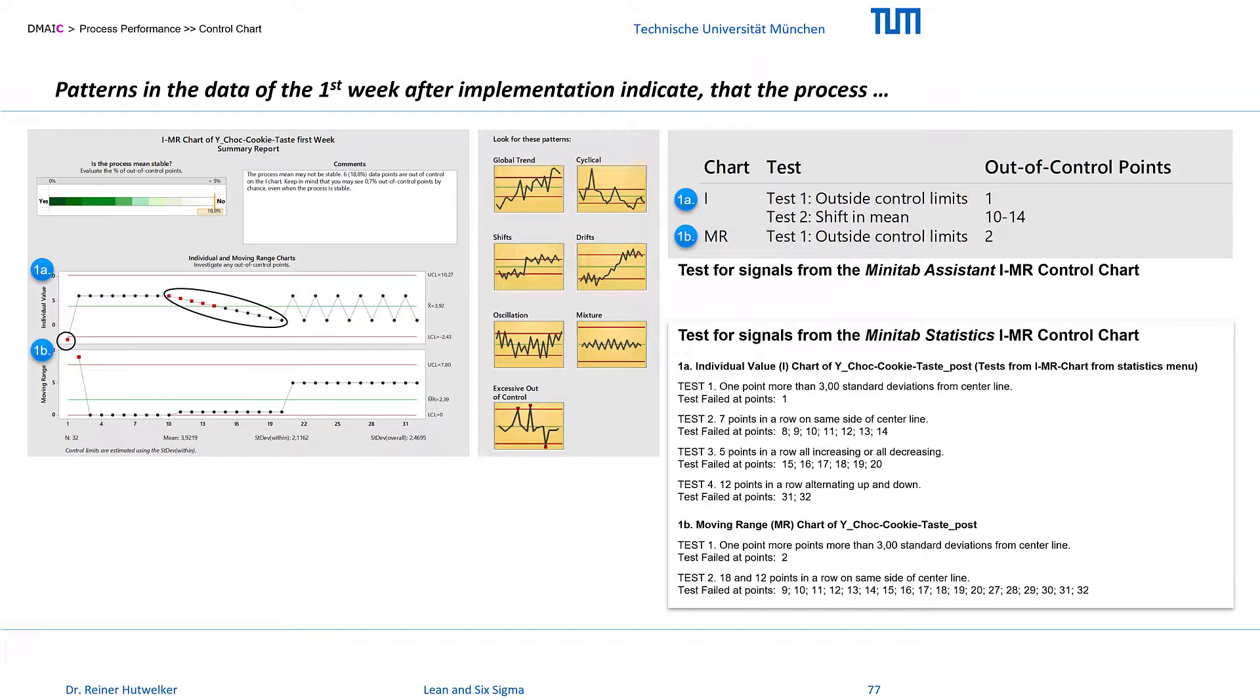The tests of the IMR control chart from the Minitab statistics menu index further patterns. Test 2 indicates a suspicious number of values in a row on the same side of the center line. This indicates that we started with a series of bad-tasting cookies. As a cause, we assume that our chef did not work according to the new standard at the beginning of the week and continued to nibble on chocolate.